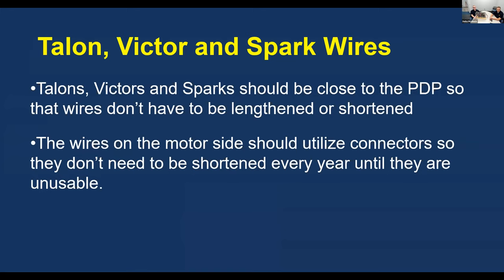The Talons, Victors, and Sparks should be close to the PDP so that the wires don't have to be lengthened or shortened. The wires on the motor side should utilize connectors so they don't need to be shortened every year until they're unusable. We like to use Anderson pole connectors for that — you can just pull them off an old robot and put them on a new robot. It saves money and time.